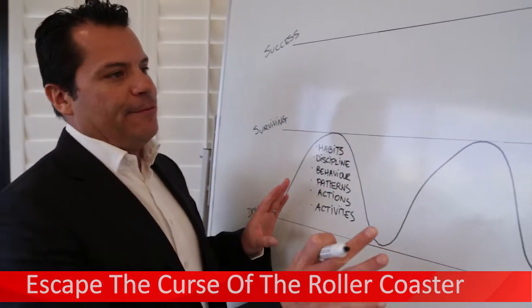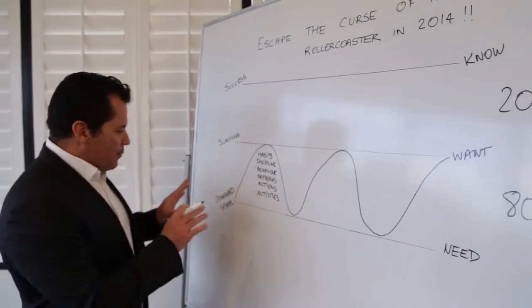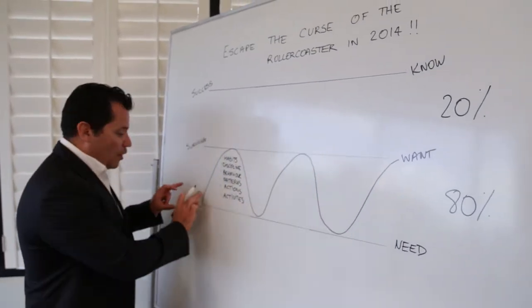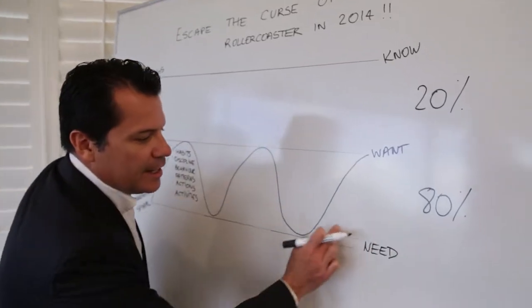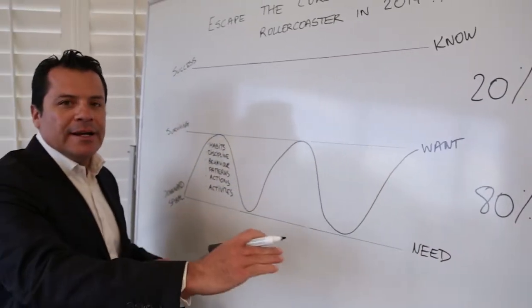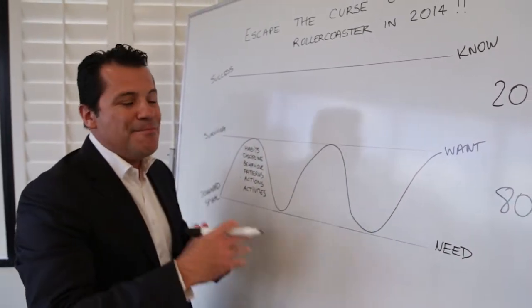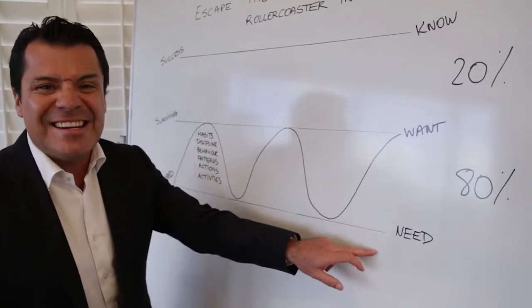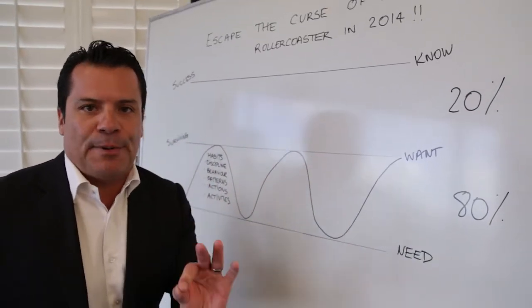I've got a little graph here for you to understand what it may look like. We've got downward spiral, we've got need, which is at the bottom line of any part of the rollercoaster. Meaning that I need a listing, I need a sale. Normally the state of desperation.